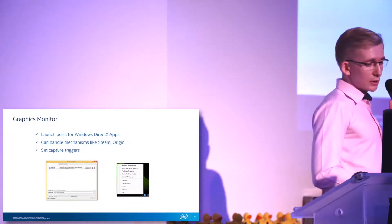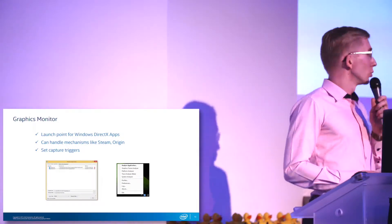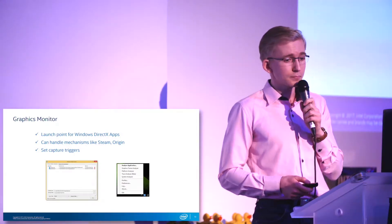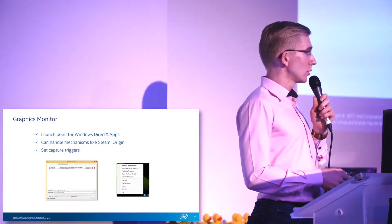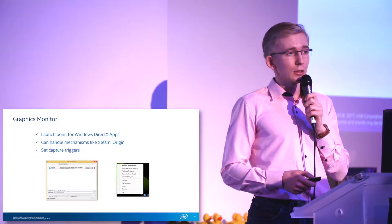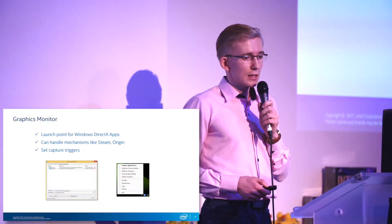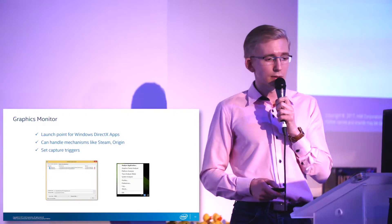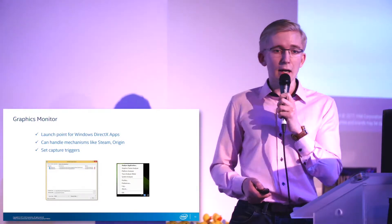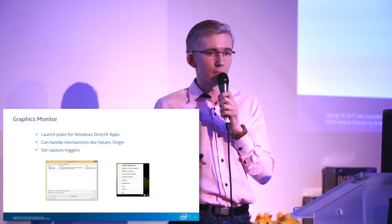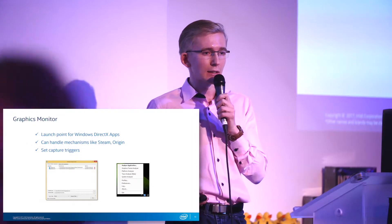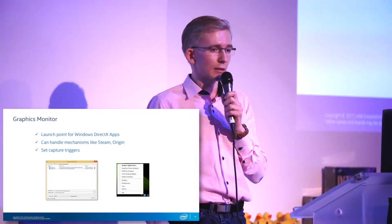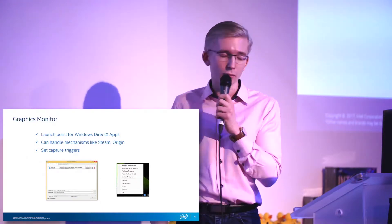Graphics Monitor is the tool used to launch your application. It can handle even complex mechanisms like Steam or Origin. A powerful feature of this tool is that you can set up frame triggers — for example, your game is running at 30 or 60 FPS and suddenly you see a drop to 5 FPS. It can be hard to capture a single frame by hand for offline analysis. This tool allows you to set up those triggers, and whenever the FPS drops, you'll have that frame for further analysis.